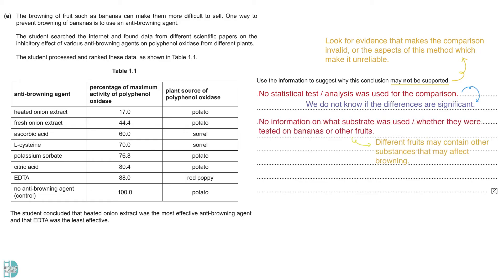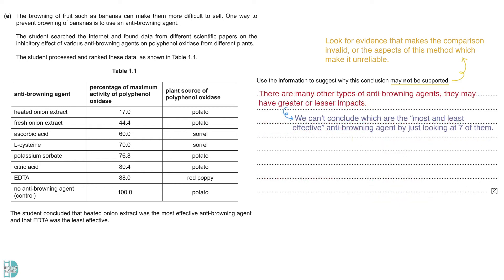There is no information on what substrate was used. We do not know whether the anti-browning agent was tested on bananas or other fruits. Different fruits may contain other substances that may affect browning. There is no information on the type of inhibition. It is not a fair comparison if the inhibitor works differently. Seven anti-browning agents were investigated. Many other anti-browning agents may have greater or lower impacts. If we do not test all of them, it is not quite right to say that heated onion extract was the most effective and EDTA was the least effective.